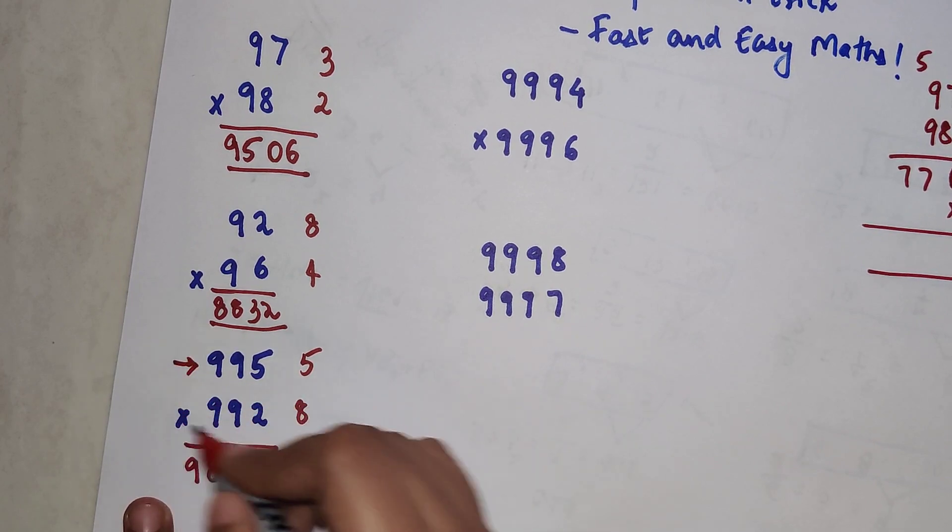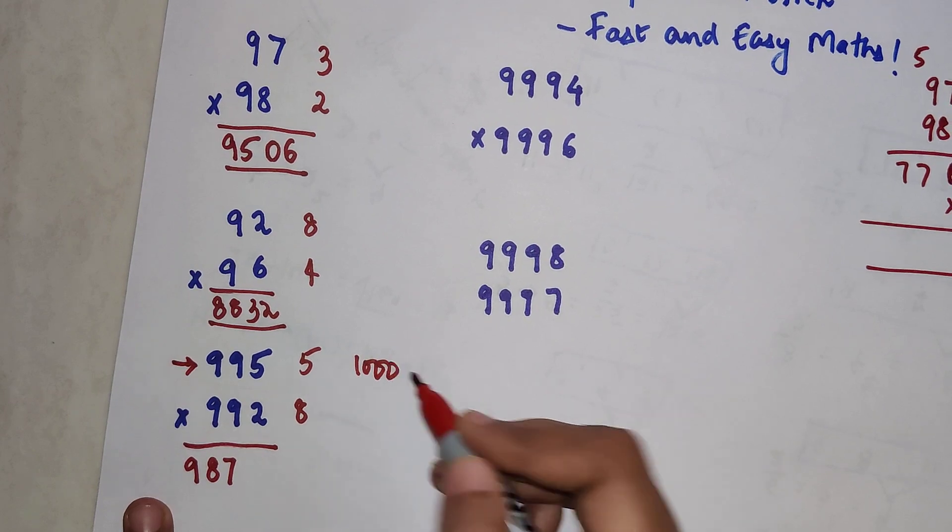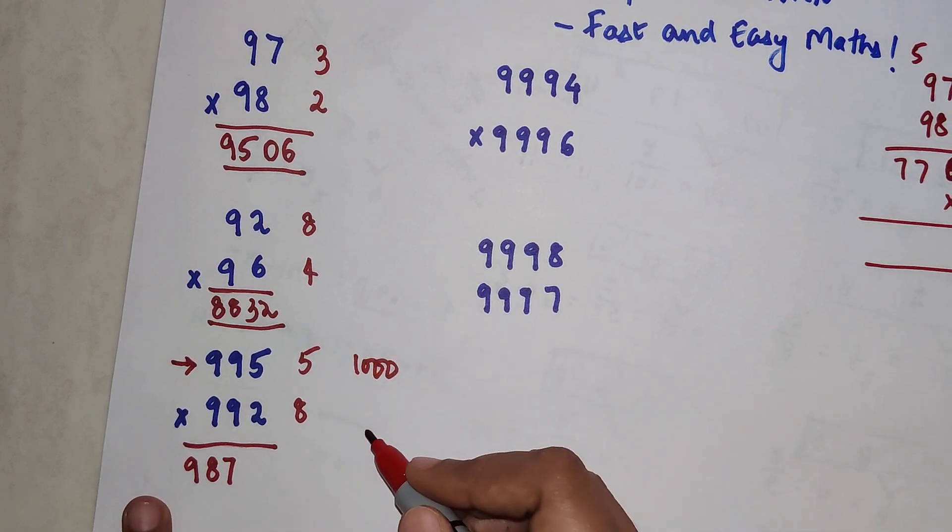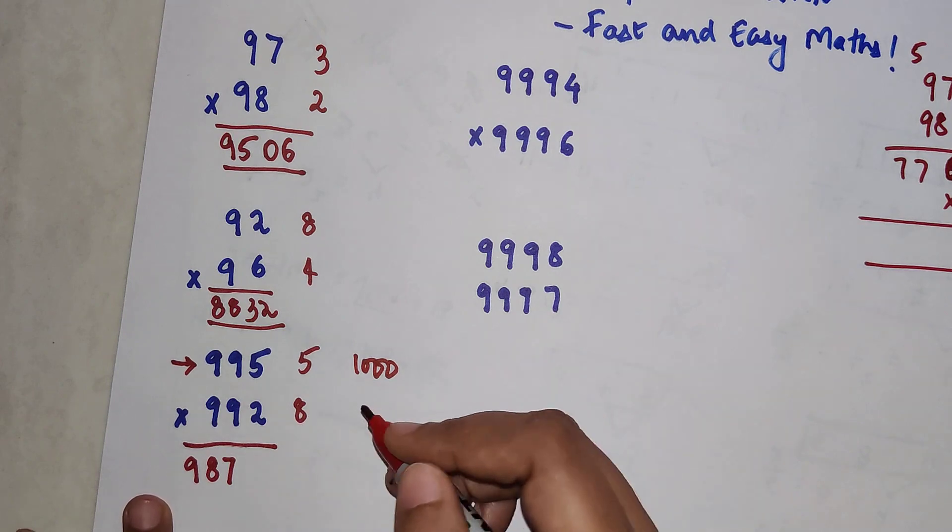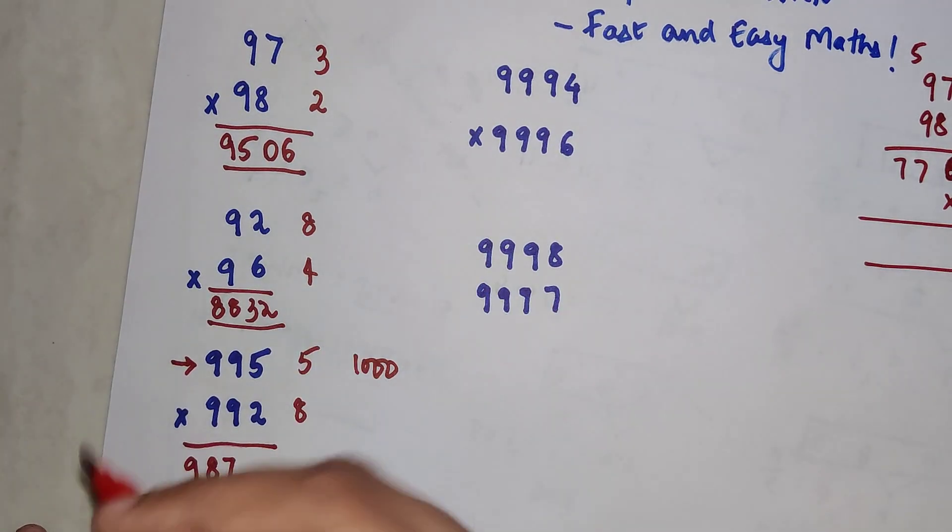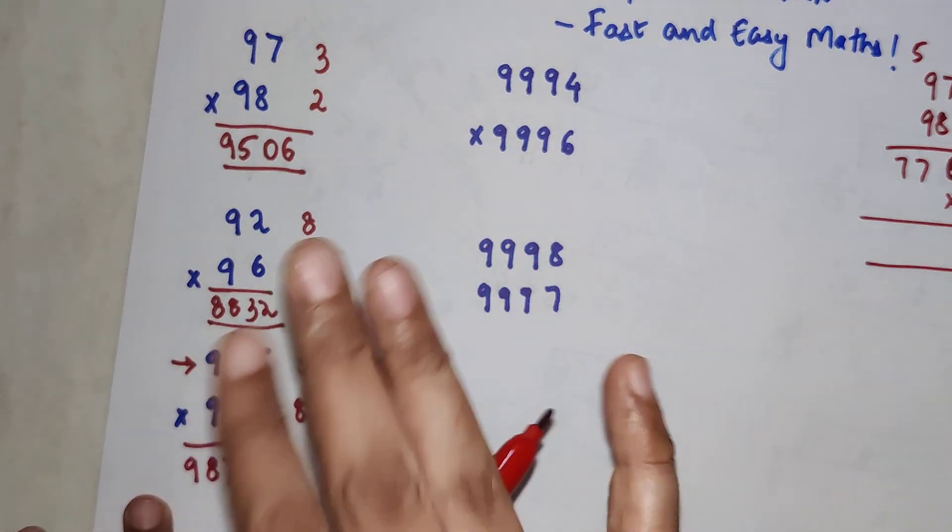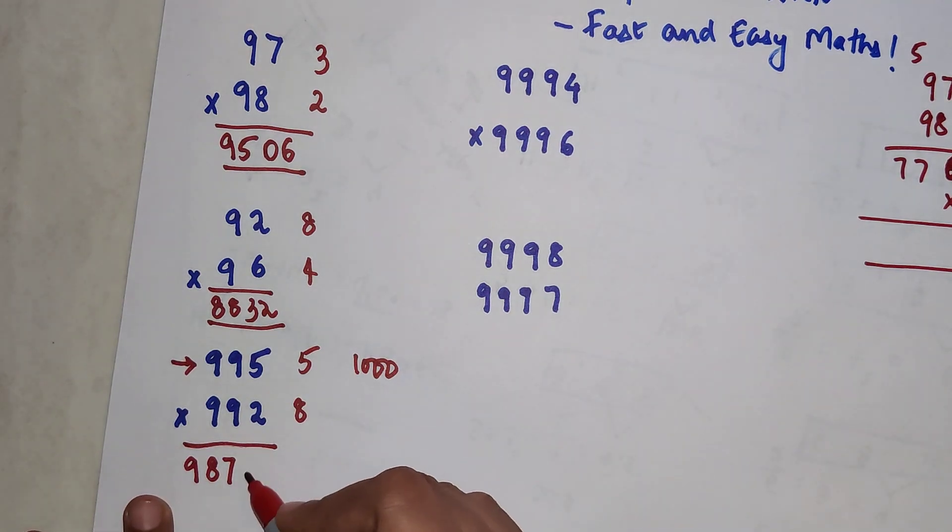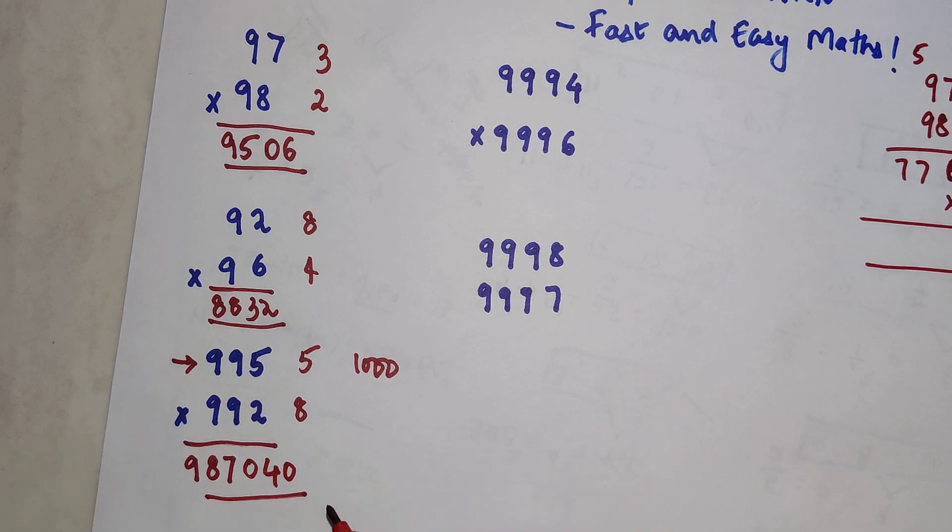Now please understand, this particular number is very close to 1000. 1000 has how many zeros? Three zeros. And my final answer had 40, that's only two digits. So we want the final answer, the multiplication answer, to be in three digits. So you write 040 and that is your answer for 995 multiplied by 992.